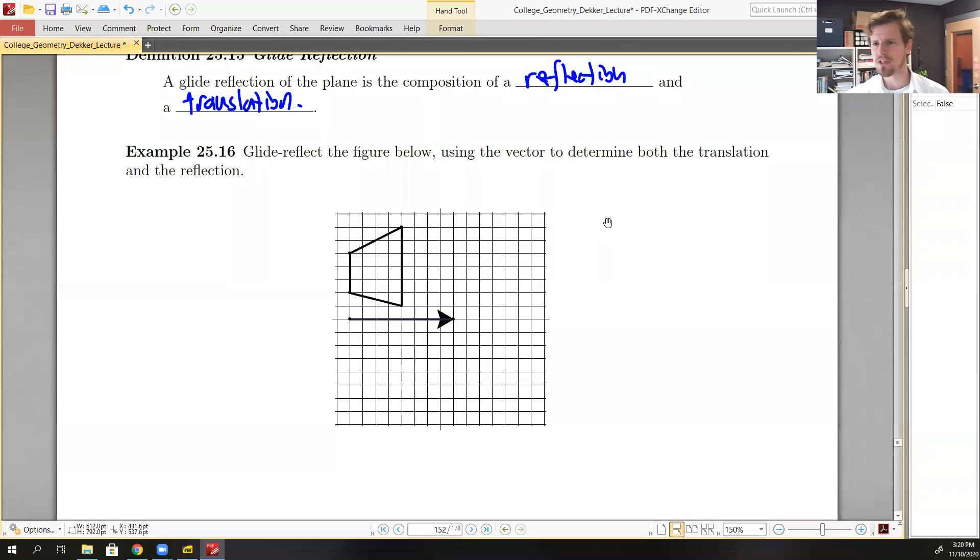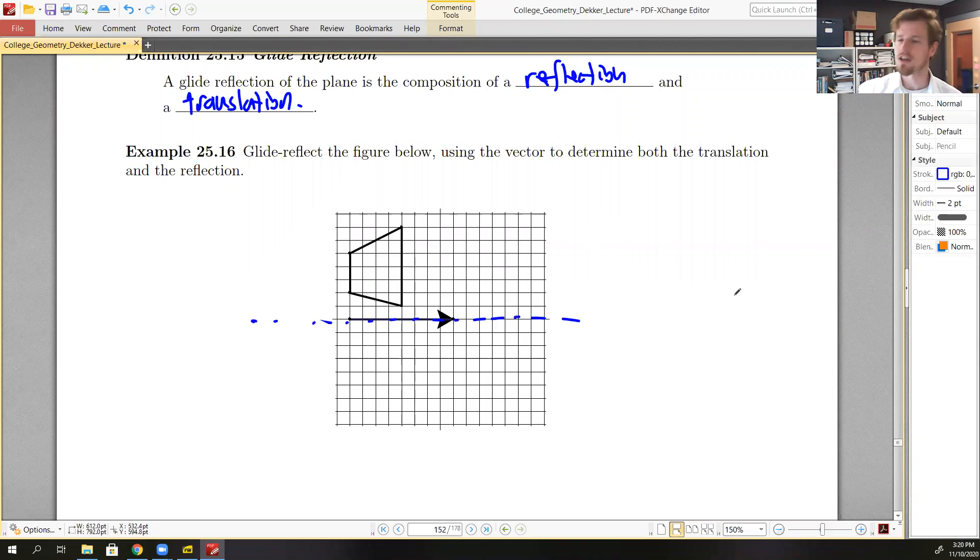So typically how it's given is as a single vector and that vector represents the translation as well as the reflection. And so the translation is by this vector, but then that vector also represents the line of reflection as well.